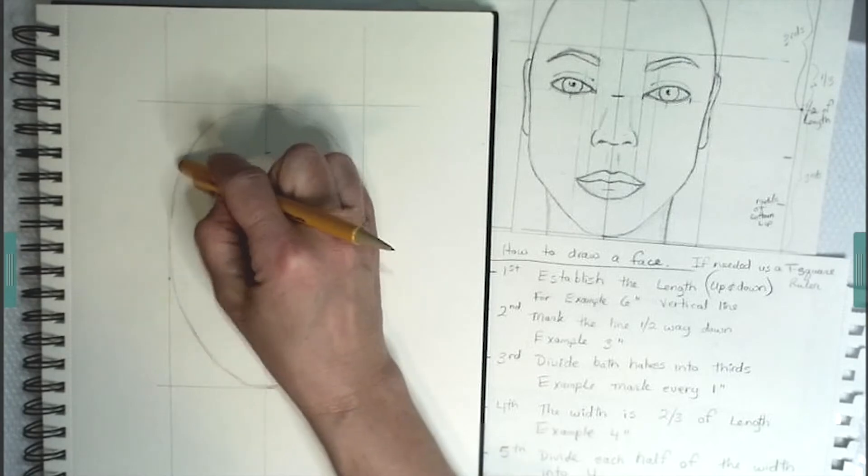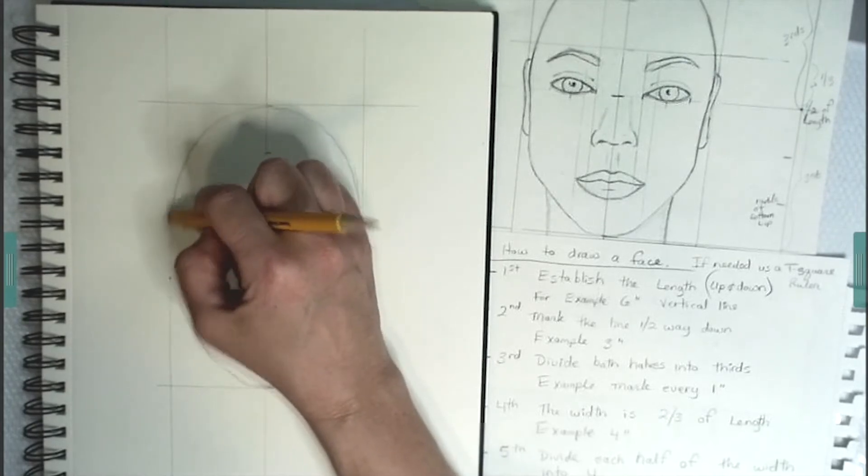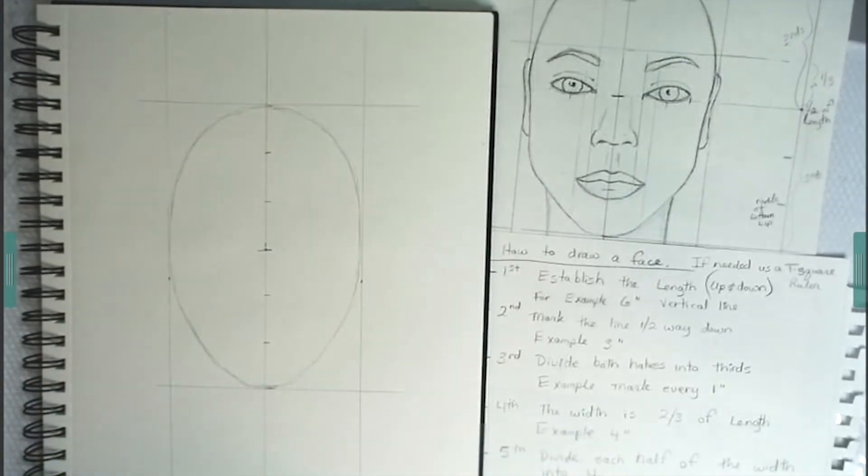Once you make all your corrections, then you're going to make a couple more lines for reference. So now you're going to divide each half of the width into four even parts.